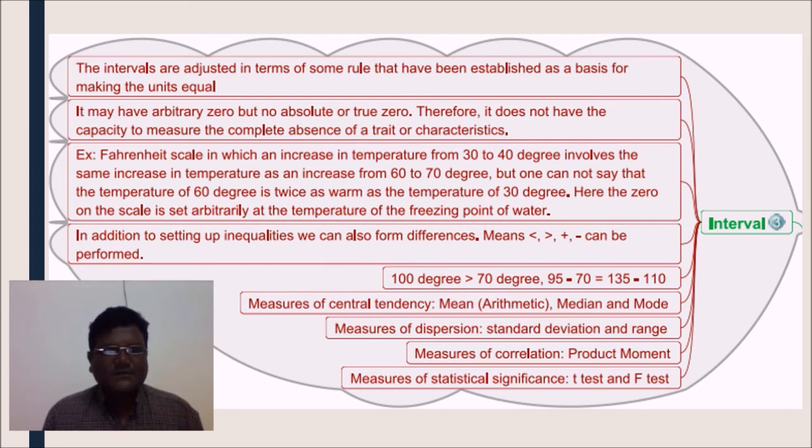Here, the zero on the scale is set arbitrarily at the temperature of the freezing point of water. In addition to setting of inequalities, we can also form differences, means less than and greater than is there. We can add, we can subtract. These things can be performed in interval scale. 100 degree is greater than 70 degree. 95 minus 70 equals 135 minus 110.